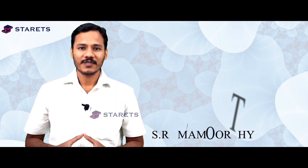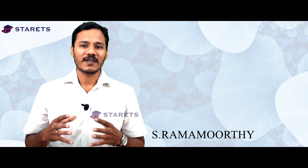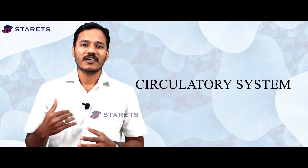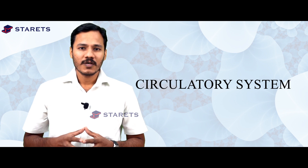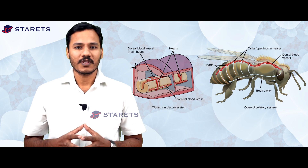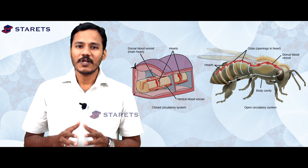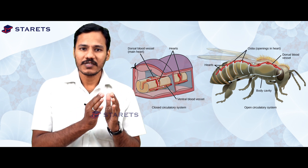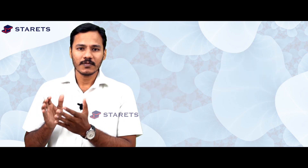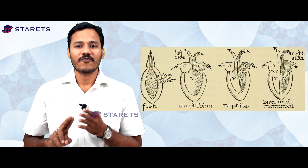Welcome to StorHeads Academy. Today we are starting a new lecture series on the circulatory system. First, we will explain the evolution of the circulatory system. There are many different types of circulatory systems. We will discuss what is an open circulatory system and what is a closed circulatory system. In the closed circulatory system, we need to discuss the two-chambered heart, three-chambered heart, and four-chambered heart.